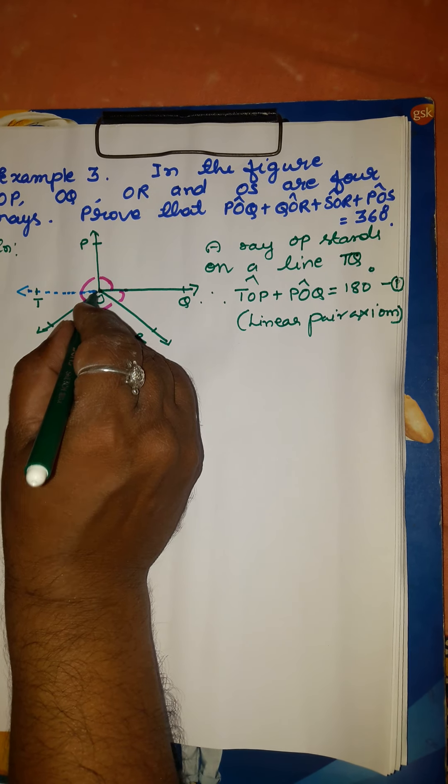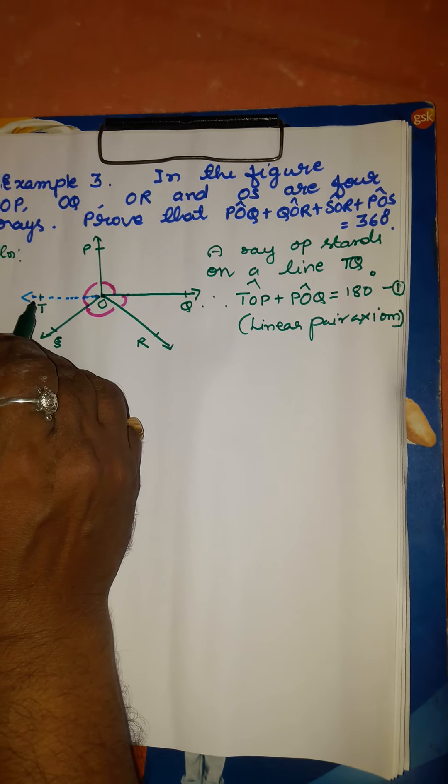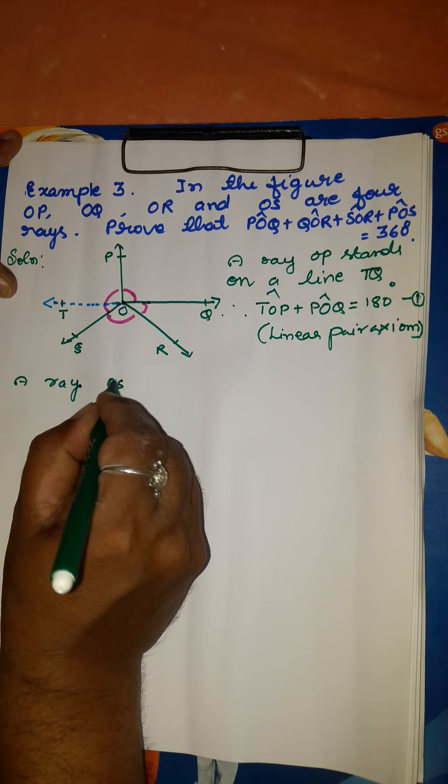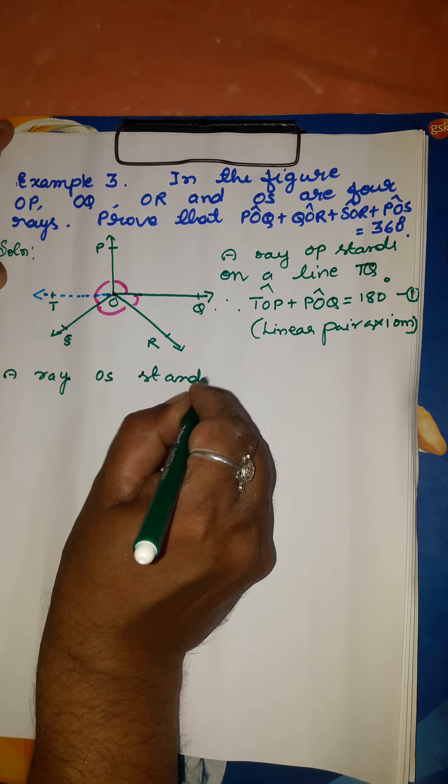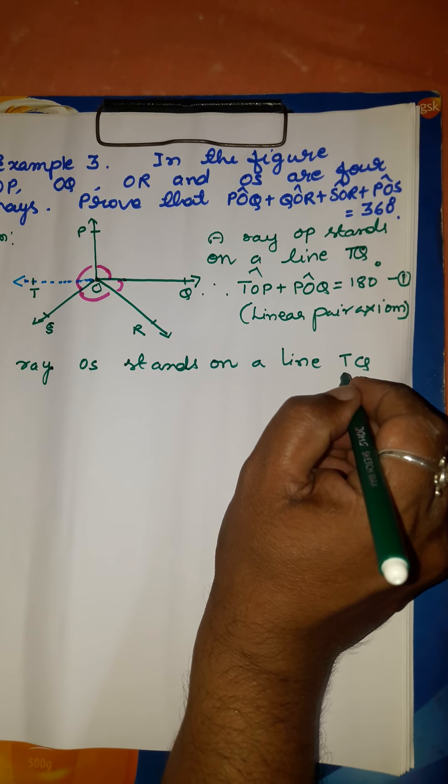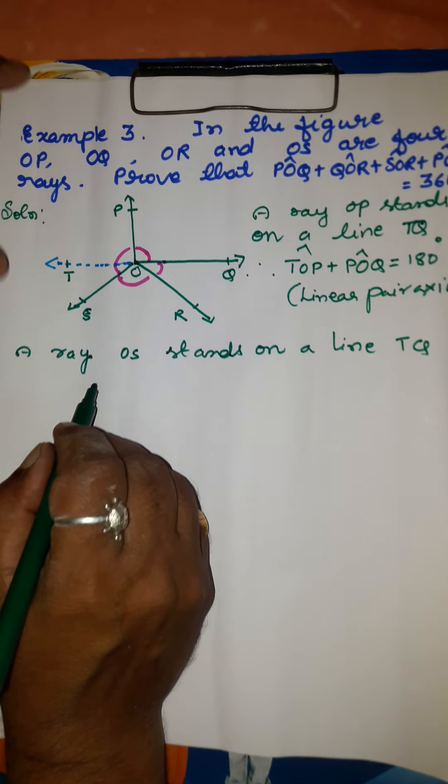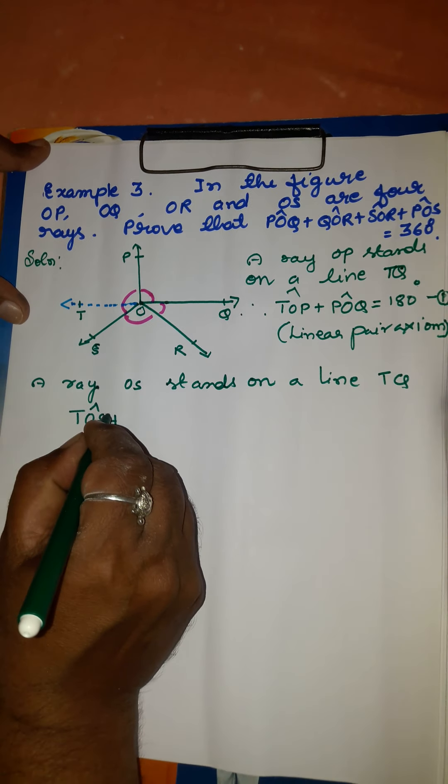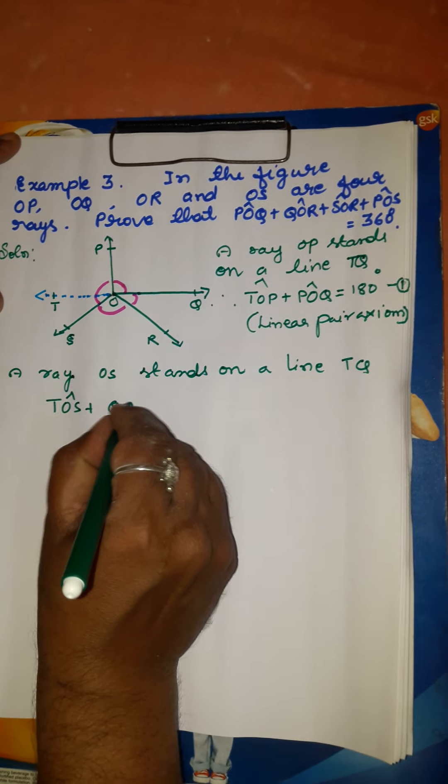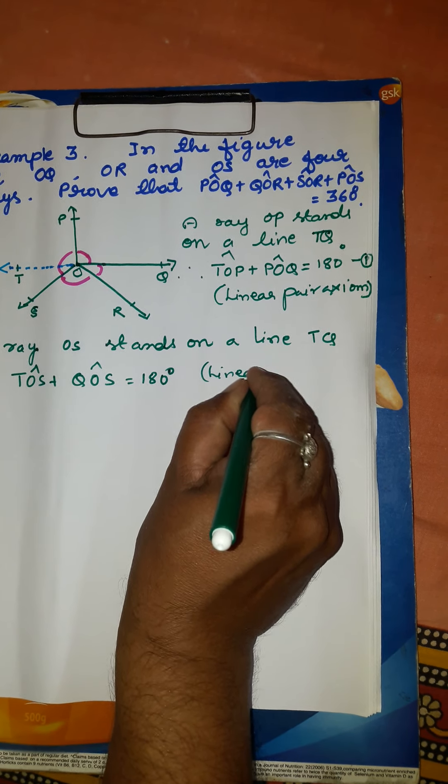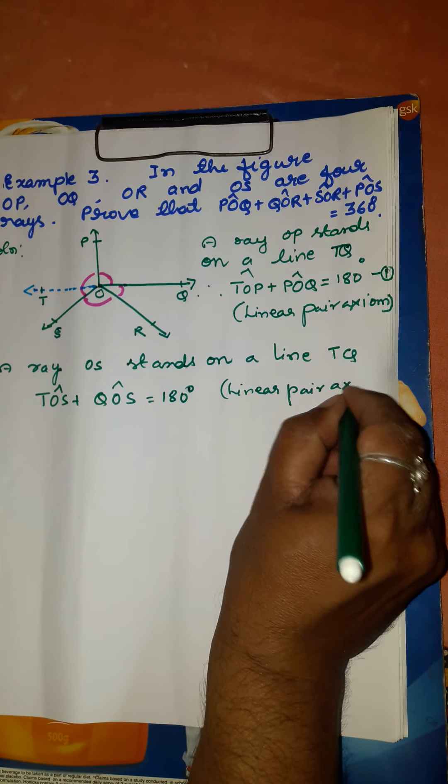Now ray OS stands on line TQ. Therefore, angle TOS plus angle QOS equals 180 degrees. This is the linear pair axiom or linear pair of angles.